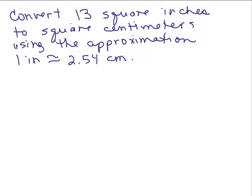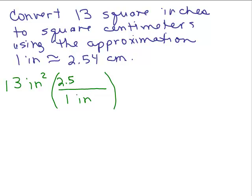Here's another one: convert 13 square inches to square centimeters, using the approximation 1 inch equals 2.54 centimeters. Now a square inch is a lot bigger than a square centimeter, so we're going to get a lot more than 13 when we figure this out. Try putting the video on pause and trying this on your own first. So we start with 13 square inches and multiply it by something that goes between inches and centimeters. I want the inches in the denominator: 1 inch is the same as 2.54 centimeters. But I want square inches to cancel, so I square everything.